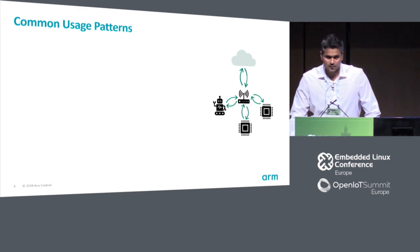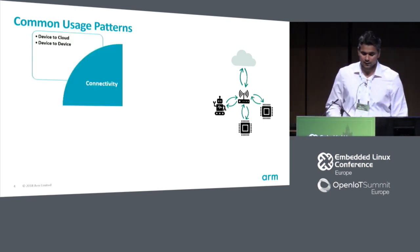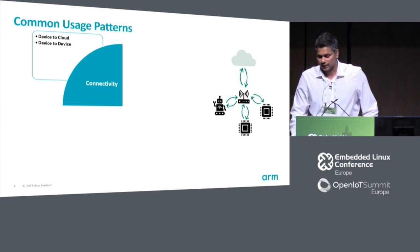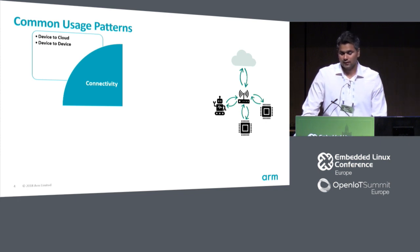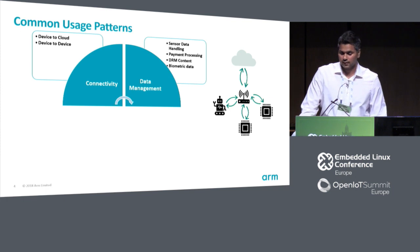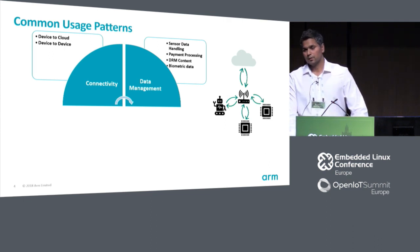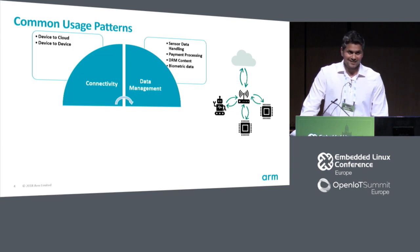In the connected devices space, every device is unique and every use case is unique. However, there are some common use patterns if you look deep enough — there is an underlying theme across all different use cases. All devices need some form of connectivity: device-to-device communication, device-to-server communication, or communication between a device and a node in a mesh network. There is also some form of data processing involved: sensor data, DRM data for multimedia content, or biometric data in medical devices. The ownership of this data becomes extremely complex to manage.